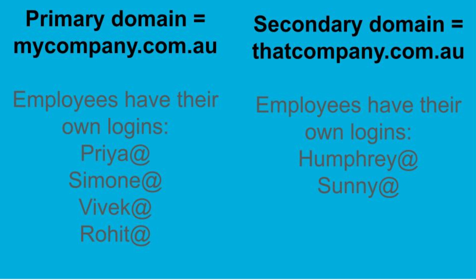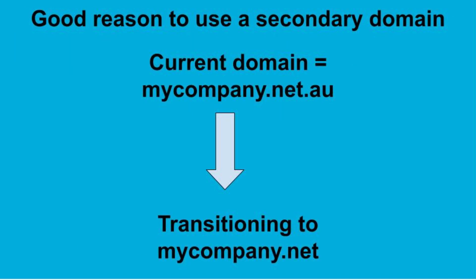However, all security settings etc. are managed through just the one Google Workspace installation. This is excellent for maintaining separate identities and teams. Or you might be looking to transfer from one domain to another — for example from mycompany.net.au to mycompany.net. In this case, you'd add mycompany.net as the secondary domain and then switch it to be your primary domain.